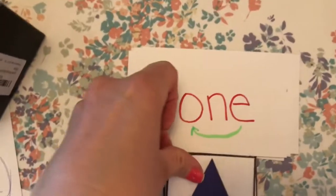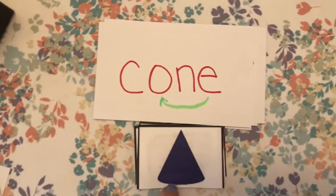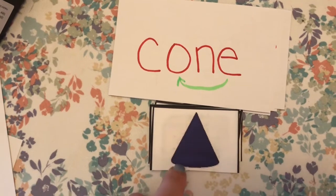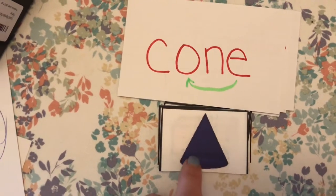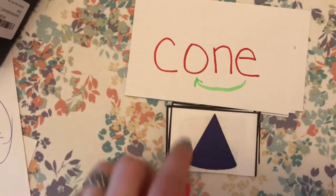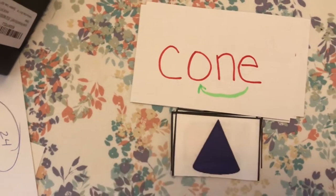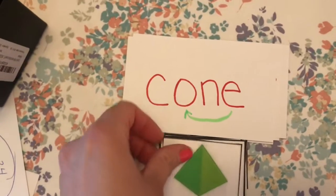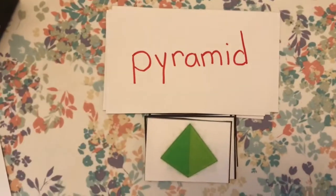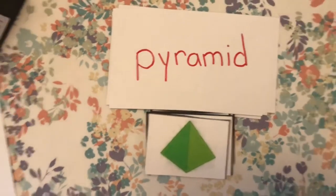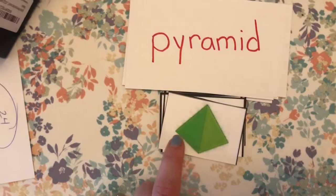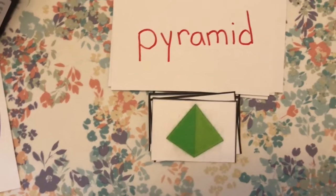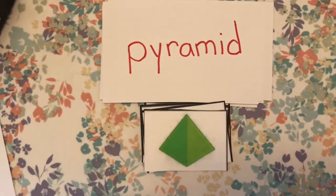The next shape we're going to look at is a cone. A cone is rounded — it has a circle shape at the bottom, its flat face is a circle, and it comes to a point at the top. And the last shape is a pyramid. A pyramid has triangles on its faces, and a lot of times at the bottom it'll make a triangle or a square when you turn it over.